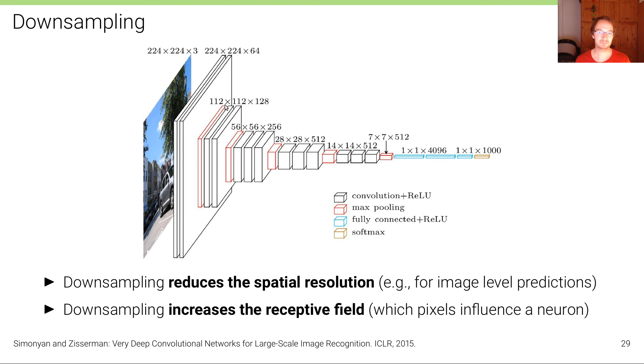Downsampling operations are useful in convolutional networks to successively reduce the spatial resolution, for instance, in order to arrive at a single outcome such as a label that describes the entire image, but also to successively aggregate more and more global information about the image by looking at larger and larger regions.